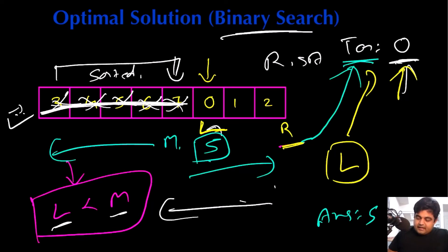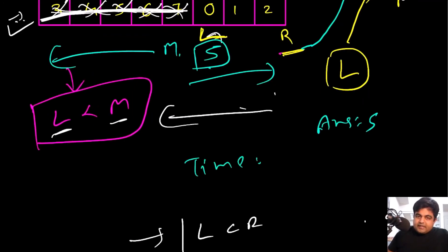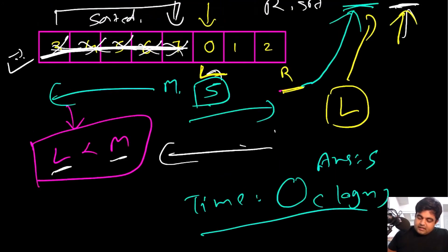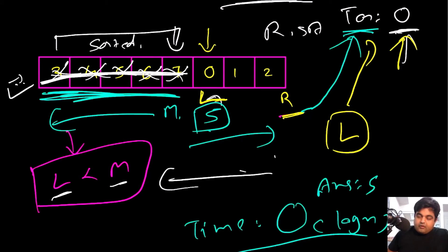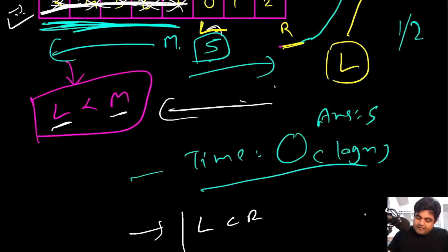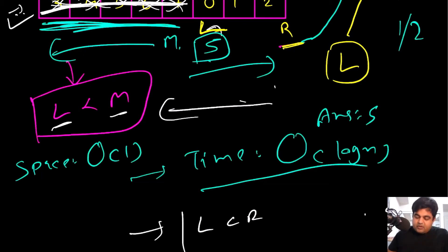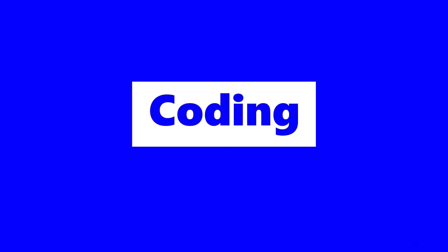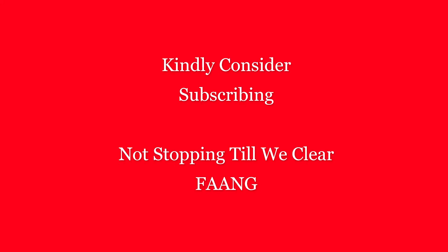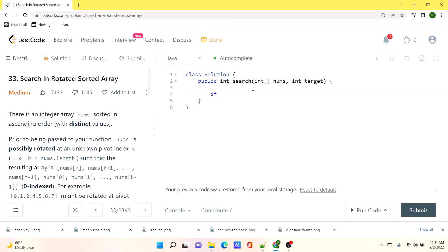The time complexity of this solution is O(log n) because in a single iteration we eliminate half of the elements, just like standard binary search. The space complexity is O(1) — constant space — because we are not using any additional data structures.